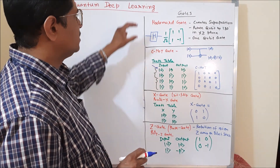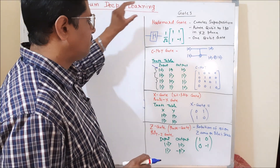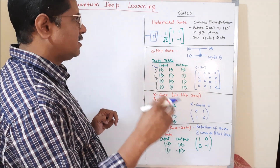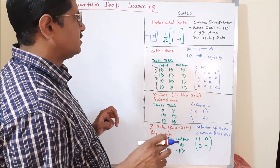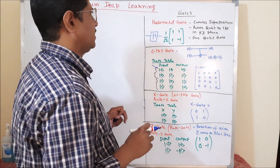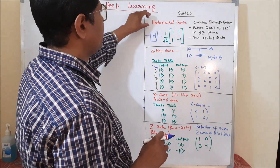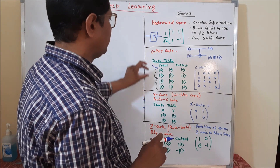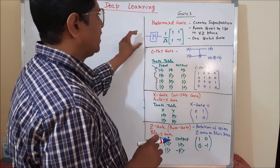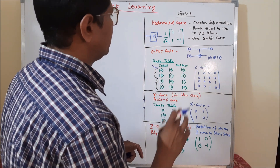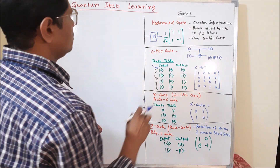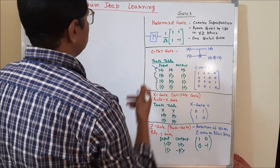In this tutorial, I will cover some very basic and useful gates actually required in constructing the quantum deep learning architecture. Like Hadamard gate, CNOT gate, X gate, Z gate, Y gate, I gate. We will consider those gates. Let us go through one by one.